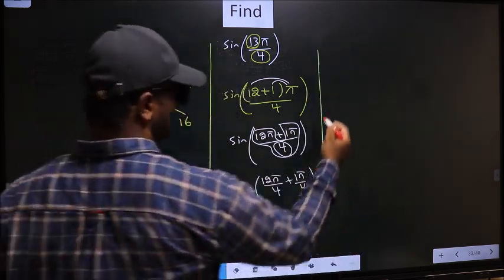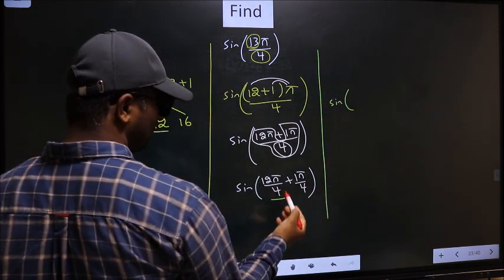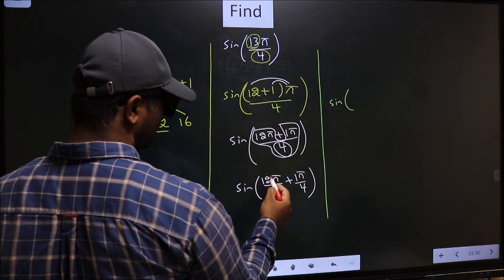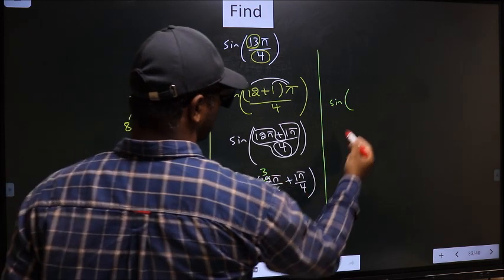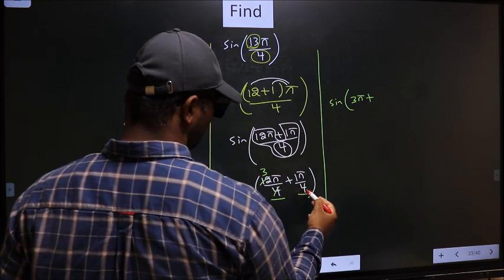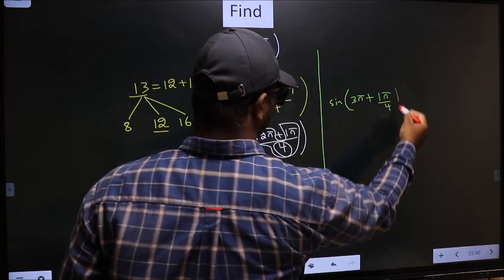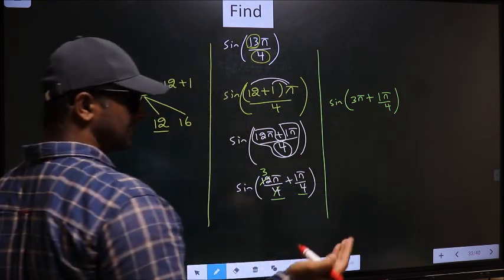Sin of 12π/4. You cancel it: 4 ones, 4 threes. So we get 3π plus this angle as it is, 1π/4.